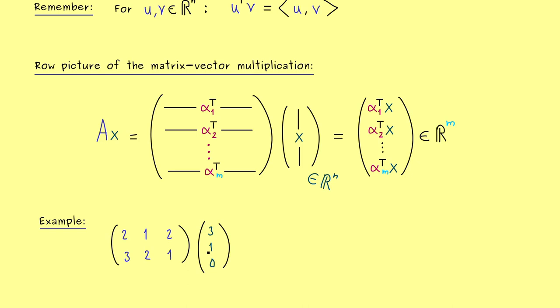Now we have learned with the row picture that we can simply combine this row with this column in the standard inner product. Hence this calculation gives us the first component in the resulting vector. Then in a similar way by using this row and this column in the standard inner product we get the second component. Therefore now we can simply finish the calculation and get 7 and 11.